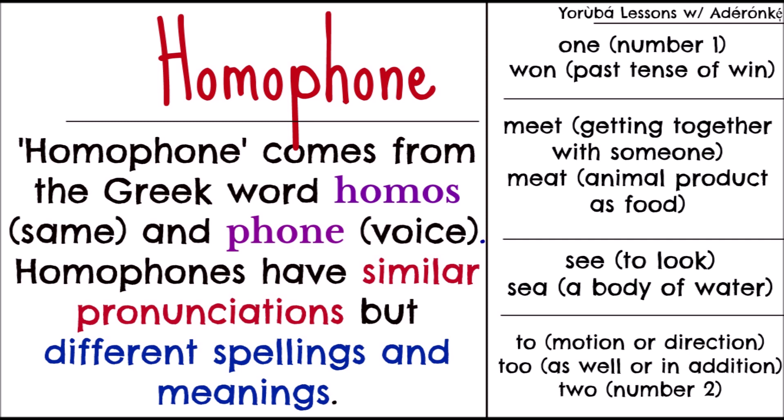For example, 'one' relating to the number one sounds very similar to 'won,' the past tense of win. 'Meet,' getting together with someone, sounds pretty similar to 'meat,' animal product as food. 'See,' which is to look, sounds very similar to 'sea,' a body of water. 'To,' a motion or direction, sounds very similar to 'too,' meaning as well or in addition, and both sound similar to 'two,' the number. Words like see, sea, one, won, and meat are regarded as homophones in English.